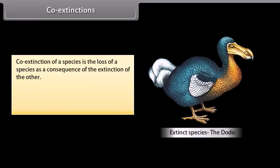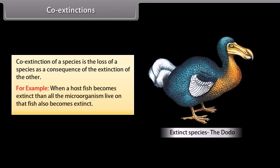Co-extinctions. Co-extinction of a species is the loss of a species as a consequence of the extinction of another. For example, when a host fish becomes extinct, all the microorganisms that live on that fish also become extinct.